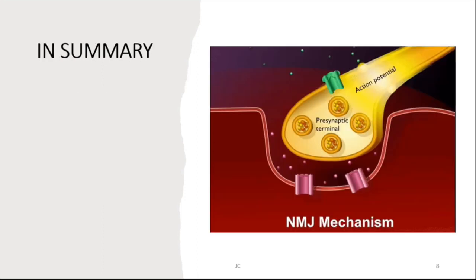In summary, a graphic demonstrates the full process: the action potential travels down the terminal neuron, calcium enters through voltage-gated calcium channels, binds to SNARE proteins, mobilizes vesicles, and acetylcholine is released into the synaptic cleft. Acetylcholine then binds to the alpha subunits of the nicotinic acetylcholine receptor — two molecules per receptor — opening the channel, allowing sodium entry, depolarizing the membrane, and transmitting the signal.